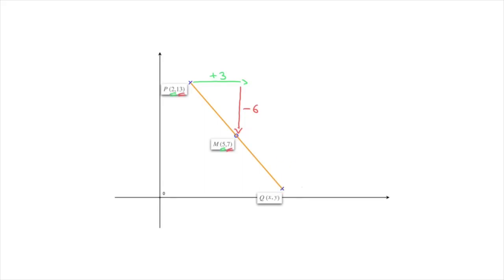In other words, starting from M, we'd have to move 3 units to the right, so that's plus 3, and 6 units downwards, so that's minus 6. And using that fact, we can work out what the coordinates of point Q have to be.